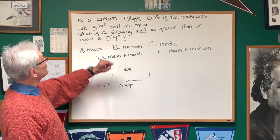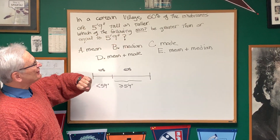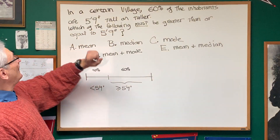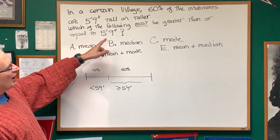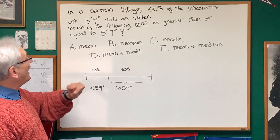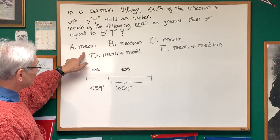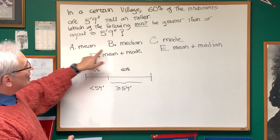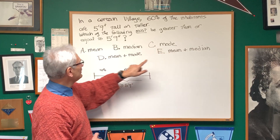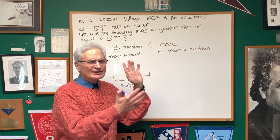Okay, let's just go right in and read this problem here. In a certain village, 60% of the inhabitants are 5 foot 9 tall or taller. Which of the following must be greater than or equal to 5 foot 9? And we have a choice of these statistics: the mean of this village, the median height of the village, the mode, the mean and the mode, or the mean and the median.